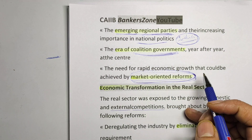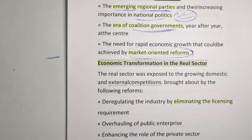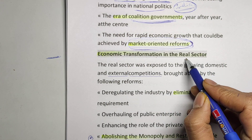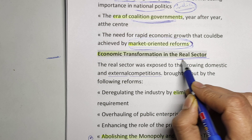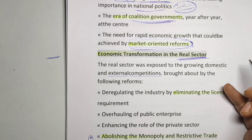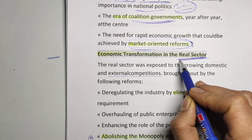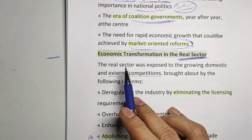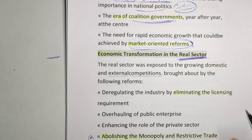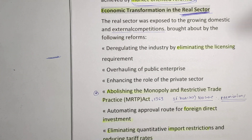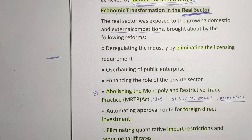Next, we have to see the economic transformation in the real sector. The real sector means the core sectors — the sectors mainly controlled by the government. There is transformation in those sectors we have to observe. We will take only a brief overview of this unit; if you want to go through the detail you can read through the notes that will be provided.